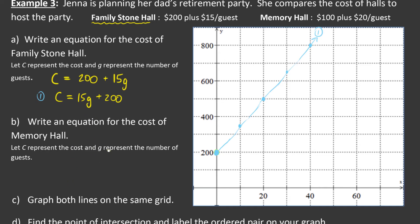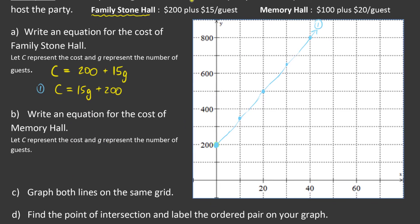Now we have to write an equation for the next one called Memory Hall. Okay. So that's a very similar scenario. It's going to be the cost. So we'll call this equation two. The cost is going to be $100 plus $20 per guest. Again, we can flop that around so that it's $20 per guest plus 100. That's a y-intercept of 100. And it goes up 20 for every guest. So if I get to 10 guests, it's actually going to go up 200. So 1, 2. Every 10. 1, 2. And there we have our point of intersection.